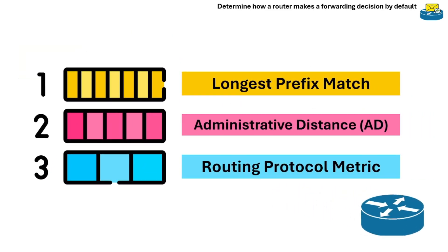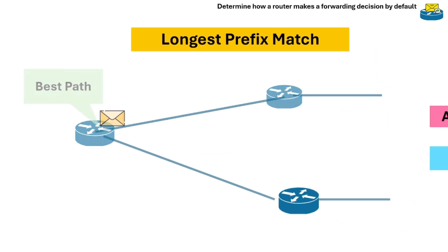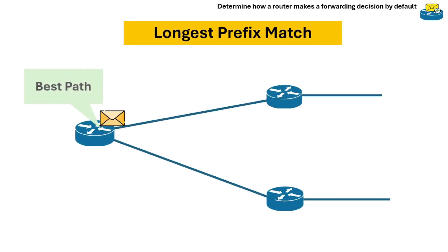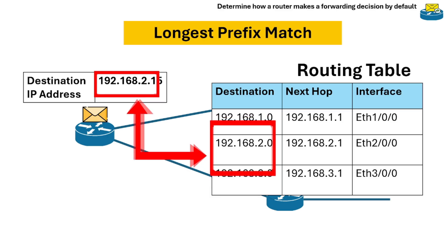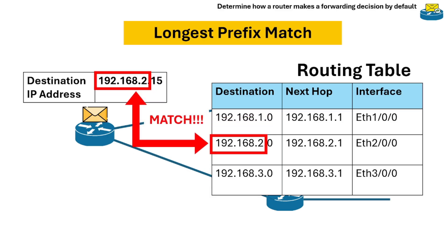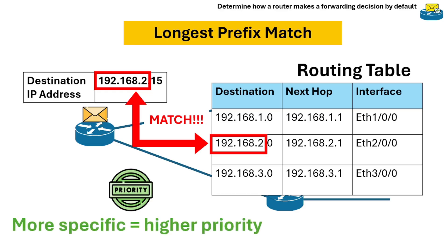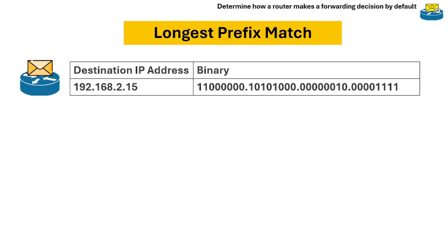Let's get started with the longest prefix match. Longest prefix match routing is an algorithm used by routers to determine the best path for forwarding data packets. When a router receives a packet, it compares the destination IP address bit by bit with prefixes in the routing table. The prefix with the most matching bits is the one the router will use.